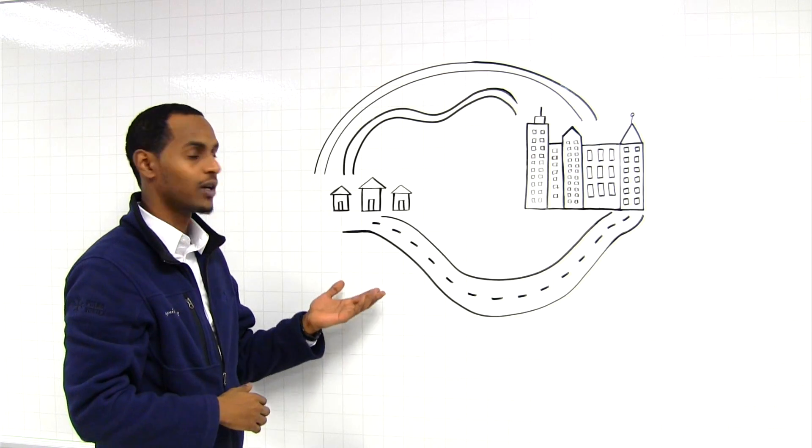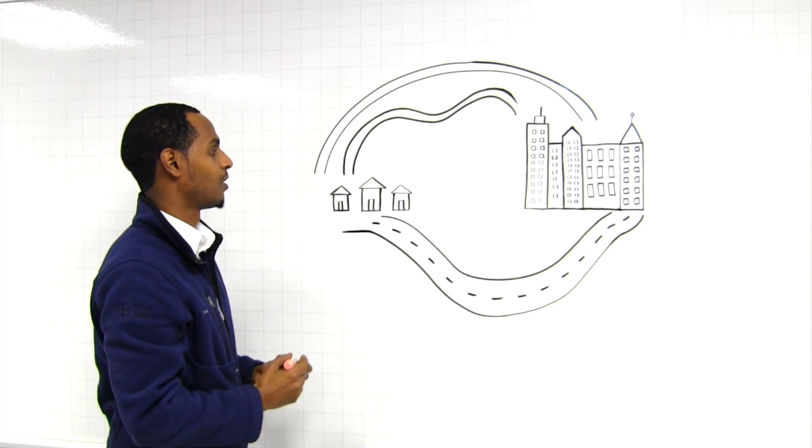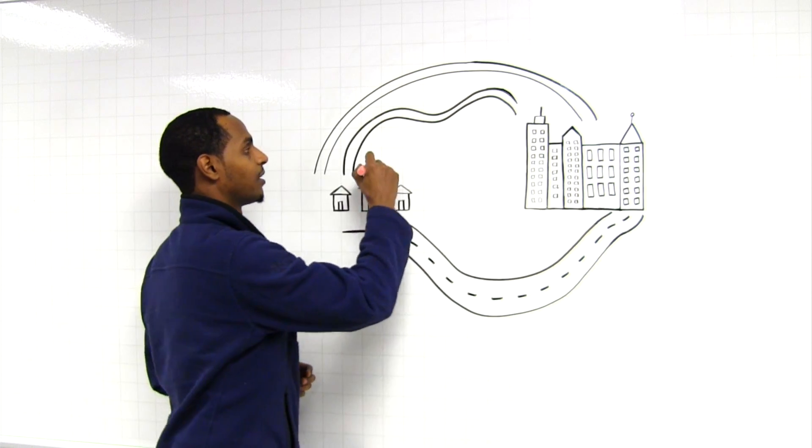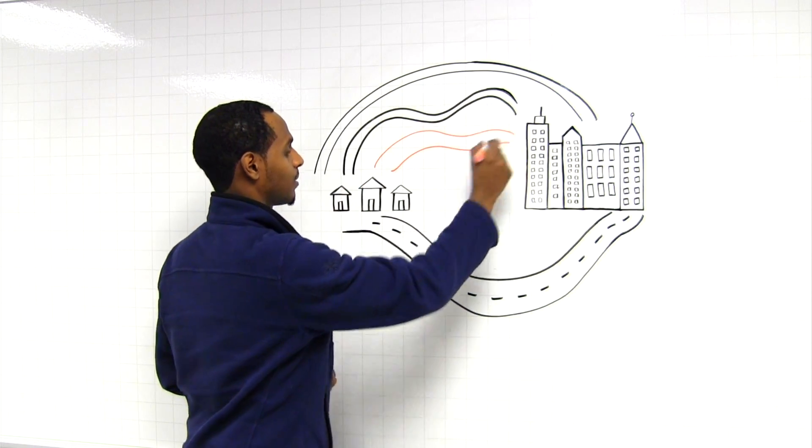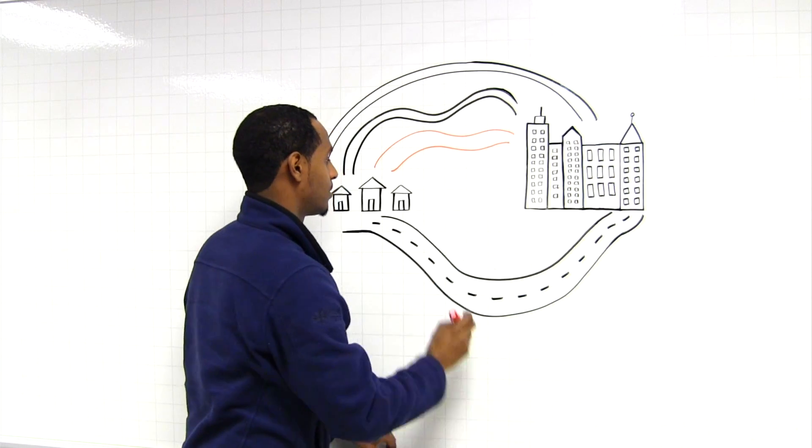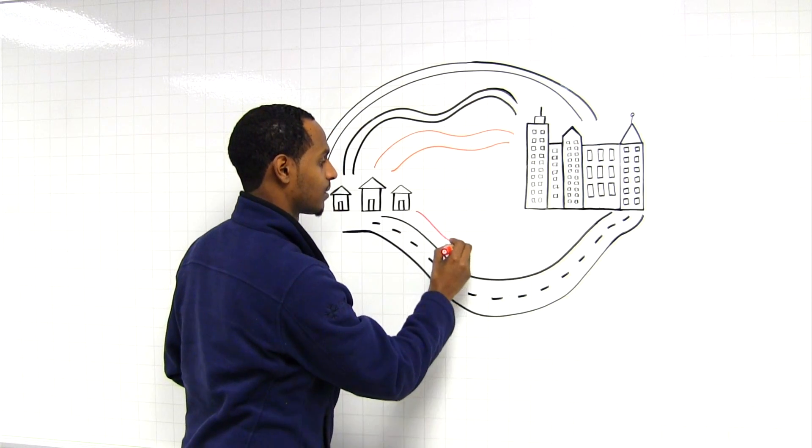So there are a number of ways you could solve this issue. One way would be to, for example, add an additional side road, or perhaps add an additional lane to an existing highway.